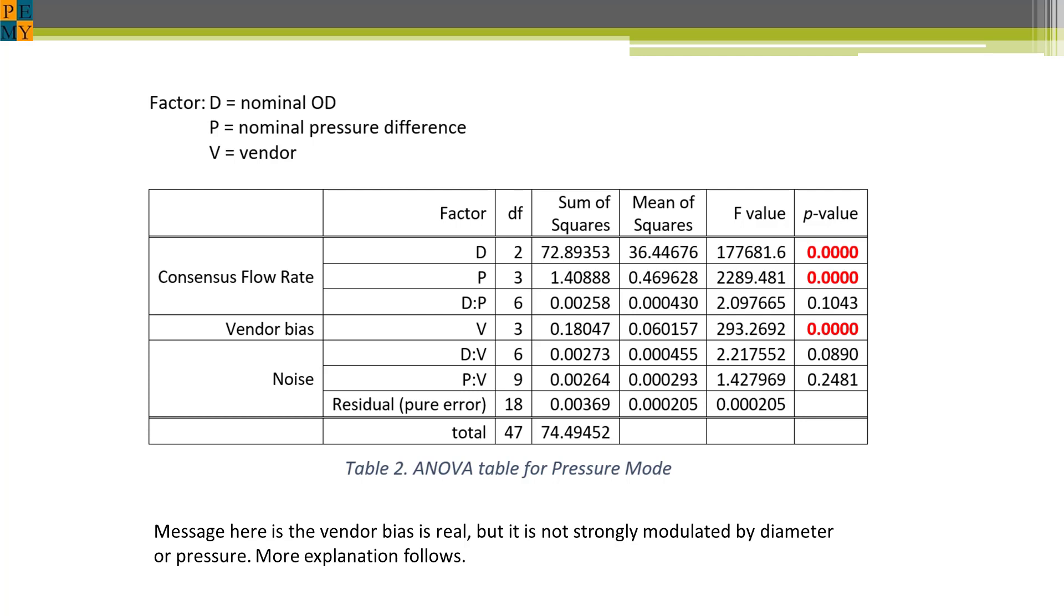As you can see, and as expected, the diameter and pressure factors are significant. But note that vendor is significant, meaning that the vendor measurement error had a big impact on the measured results.